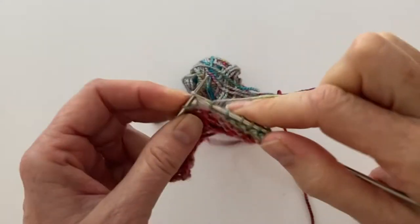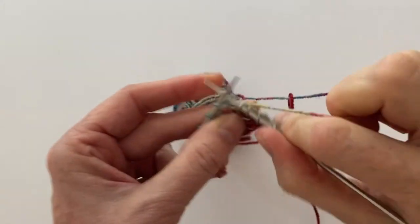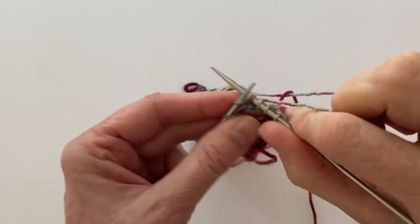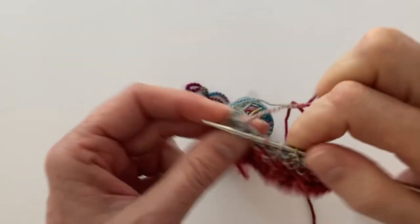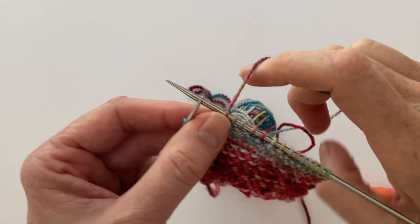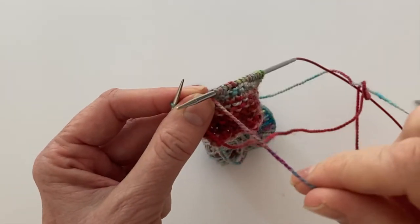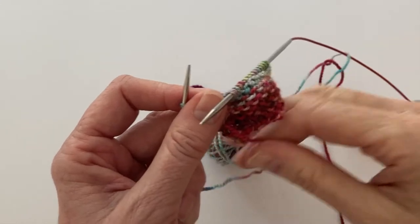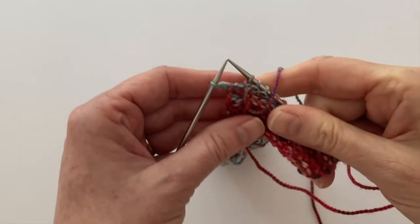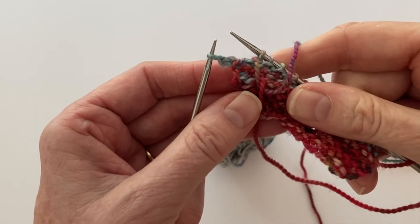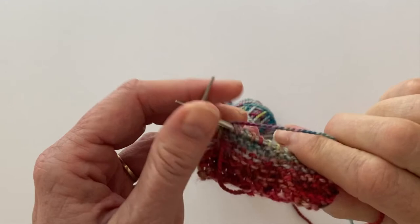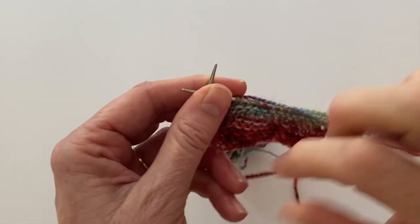What I want to do is keep the carried yarn on this wrong side of my project. That means I have to bring my working yarn onto the wrong side, catch the carried yarn. You can see that I've caught it in that loop and then take the working yarn back to the back.